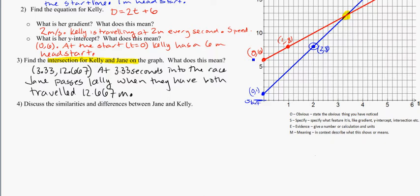So the last part of this question, and something that's often asked on an exam, is to make a comparison between two different graphs or two different relationships. So in this case, we're going to look again at Kelly and Jane and their race that they're on.